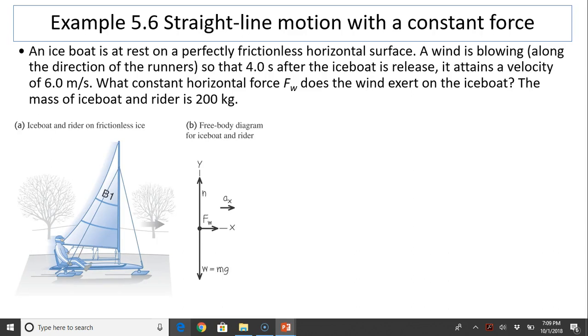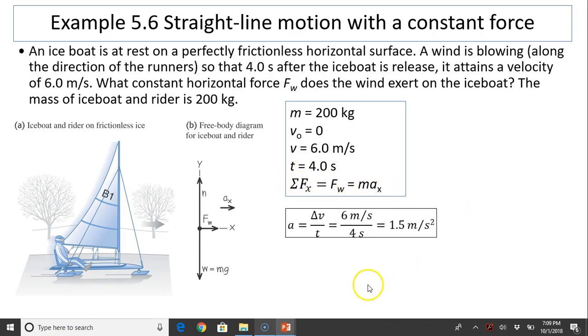Sketch the situation. Free body diagram: there's an upward force, normal force, downward force mg, and the horizontal force is from the wind because it is frictionless. Write down everything you know. Mass is 200, initial velocity is zero, final velocity is six, and time is four seconds. Sum of the force in the x direction is just the wind, which equals mAx.